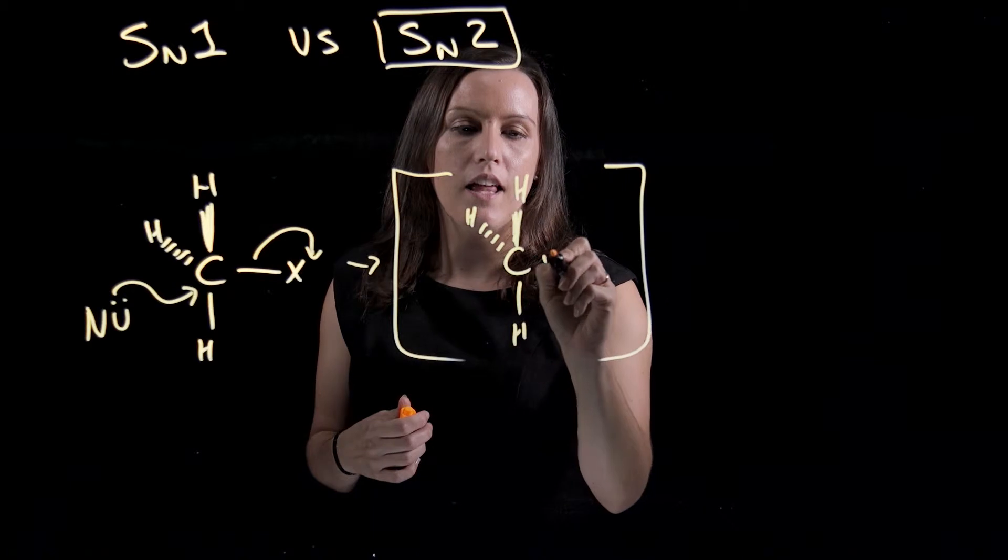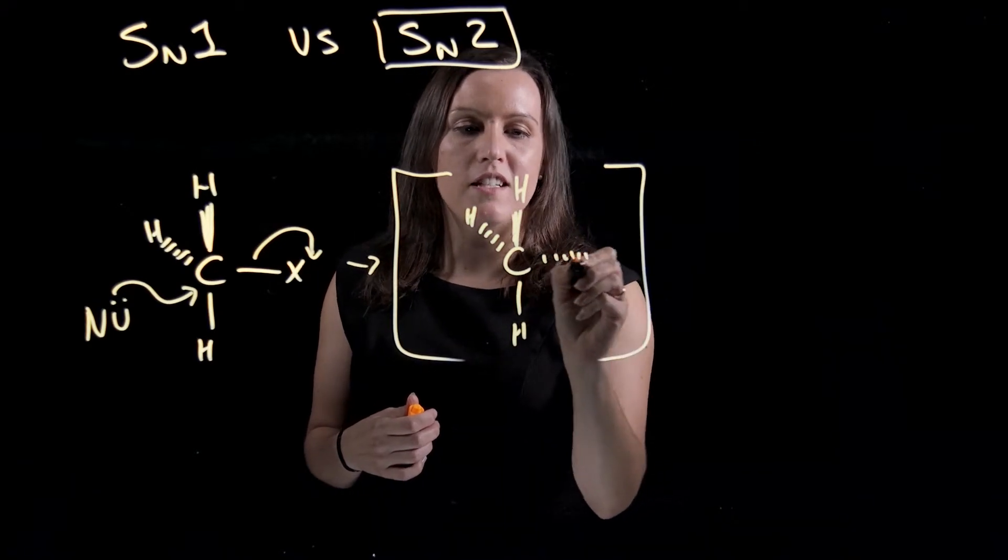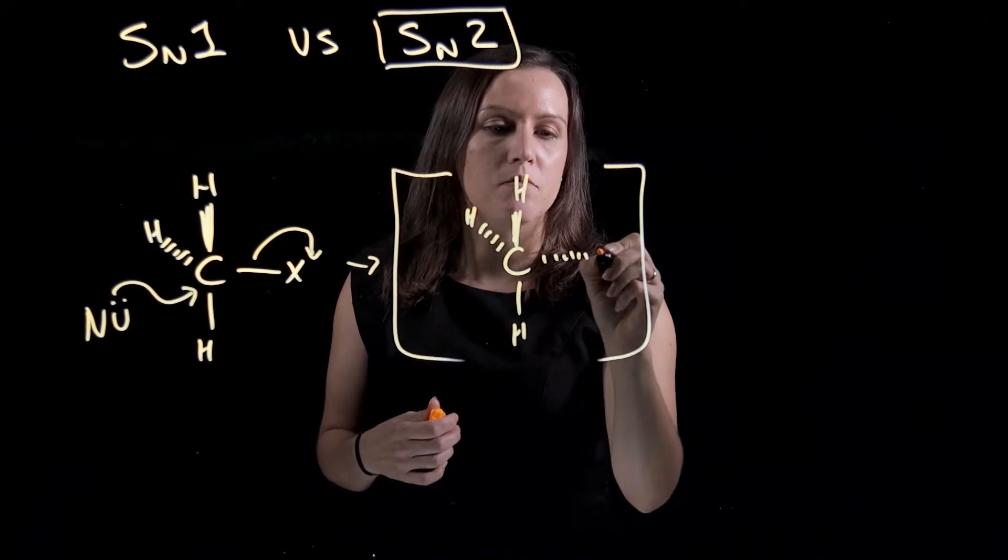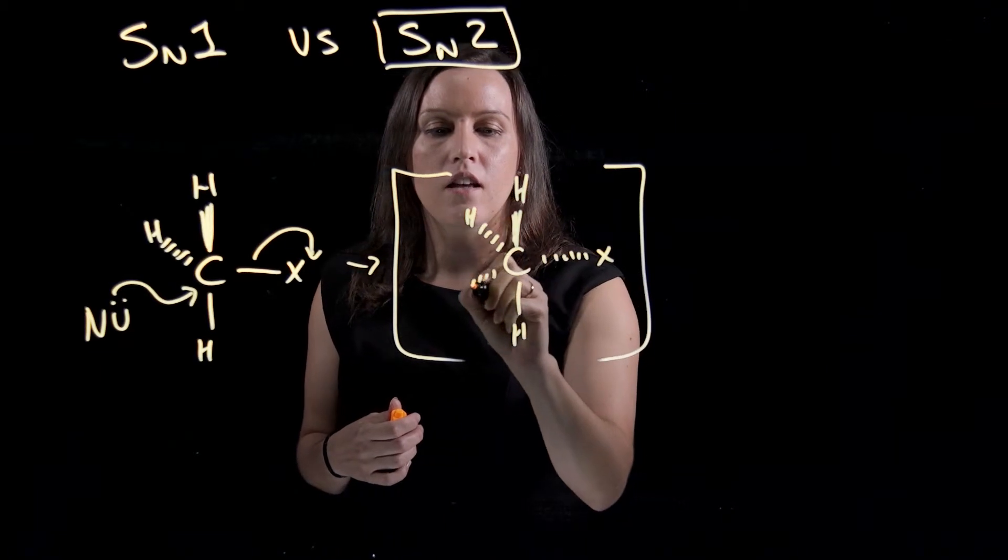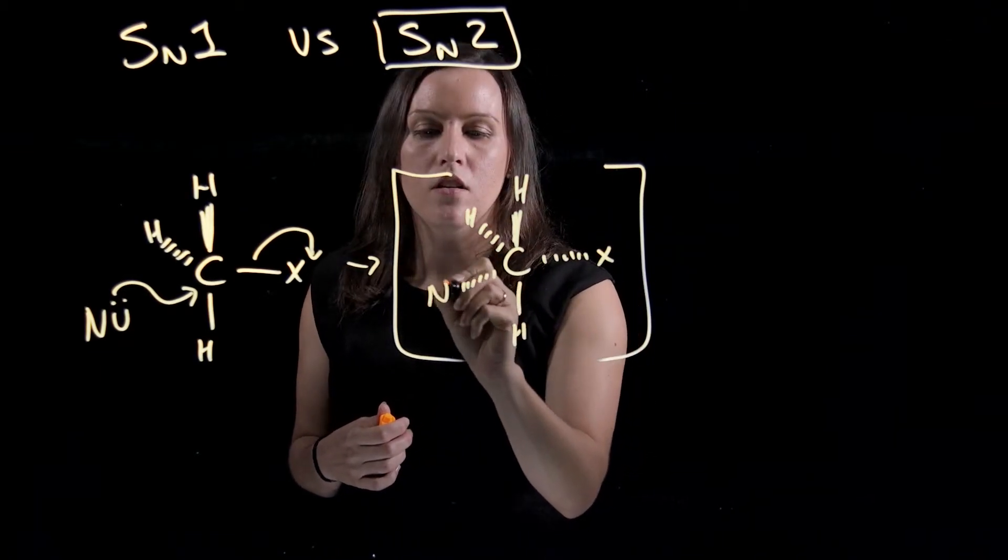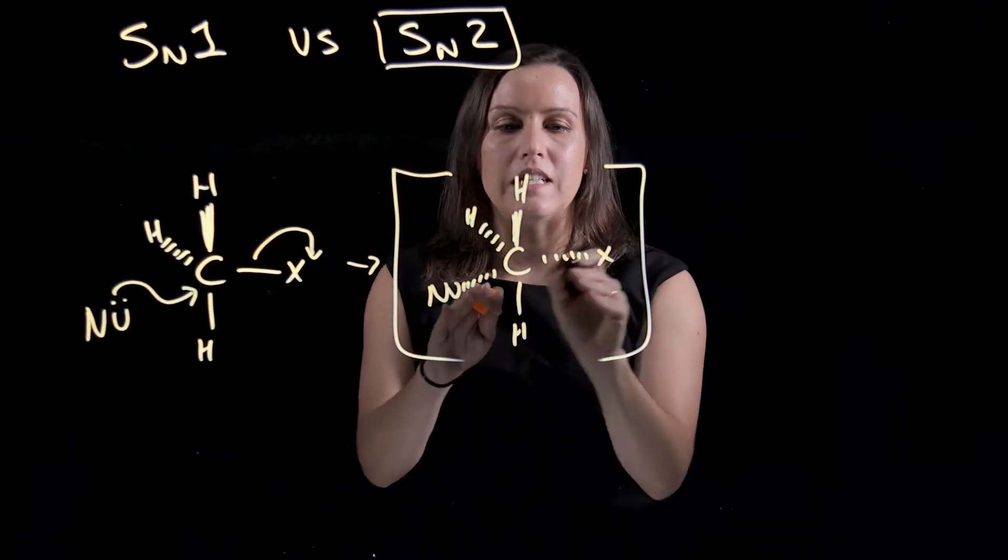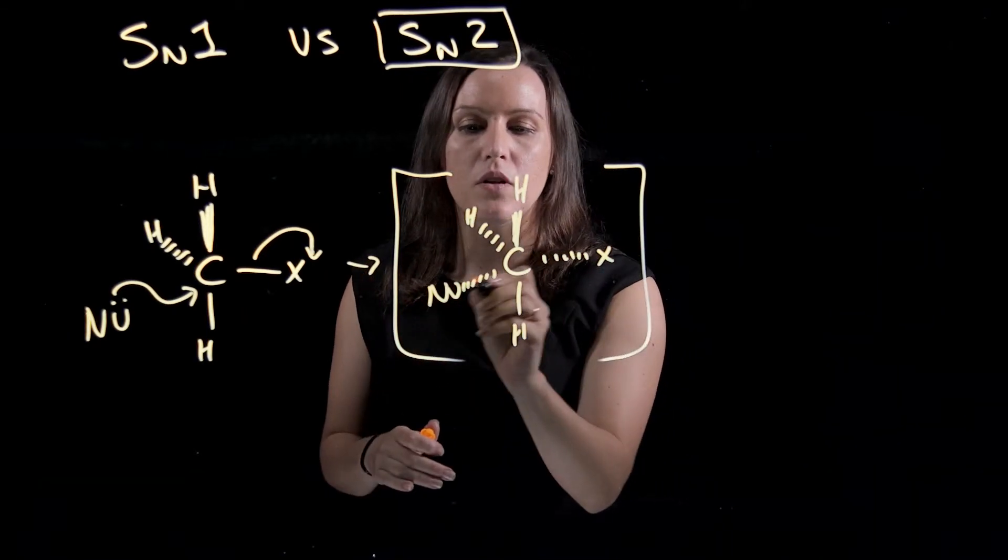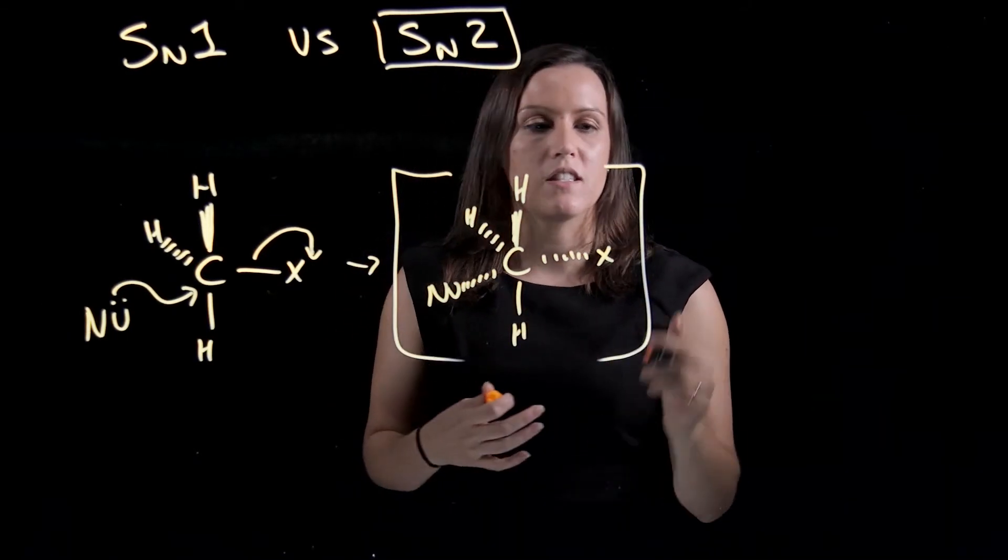So they haven't quite left. I guess that dashed line might be a bit confusing, but it's me trying to show you that it's a partially bonded group. So this one is leaving and this one's coming in at the same time. It's a transition state.